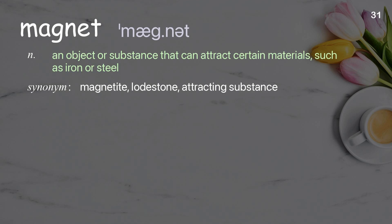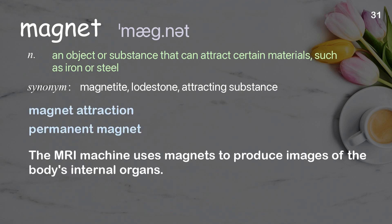Magnet: an object or substance that can attract certain materials, such as iron or steel. Examples: magnet attraction, permanent magnet. The MRI machine uses magnets to produce images of the body's internal organs.